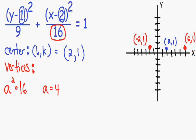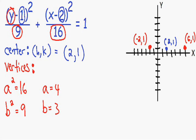Now let's plot our other two vertices using our b squared term. Our b squared is the smaller number in the denominator, which is 9. Since b squared equals 9, b equals the square root of 9, which is 3. Since our b squared term is under the y value, b goes in the y direction — up and down. So from the center, I go up 3 units and down 3 units to plot those vertices.